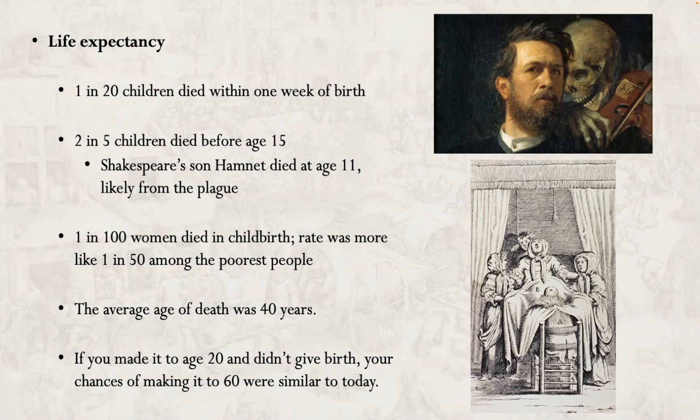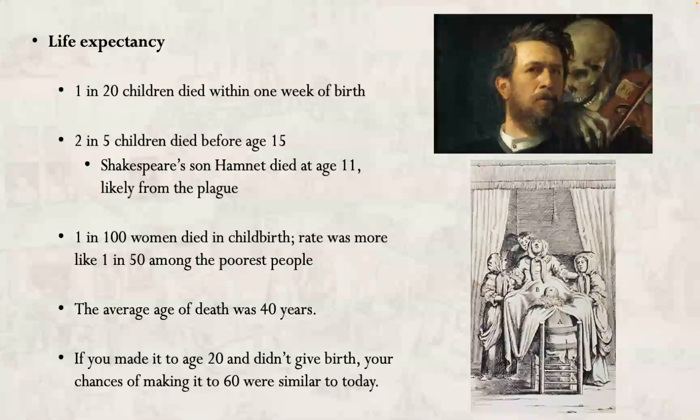That connects nicely to life expectancy. One in twenty children — 5% — would die within one week of their birth. Two in five children — 40% — died before they reached age 15. This comes close to home with Shakespeare: his son Hamnet died at age 11, likely from the plague, though we aren't certain. All we know is that he died at age 11. Shakespeare later wrote a play called Hamlet — with an L instead of an N — and there is some thought that maybe there's a connection between Hamnet and Hamlet, since they're only one letter apart.